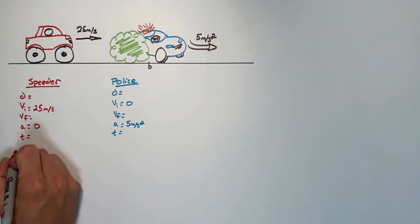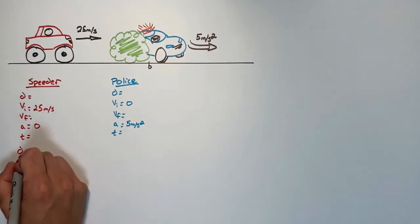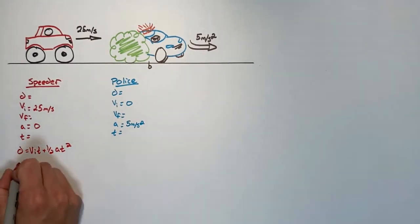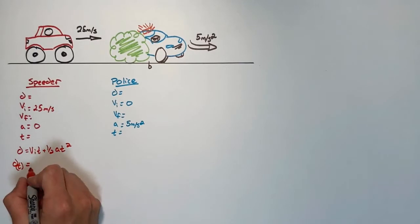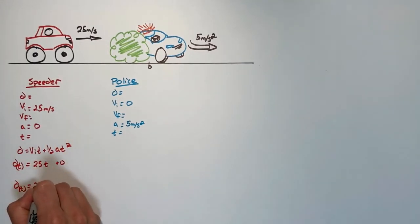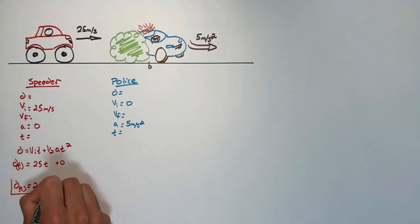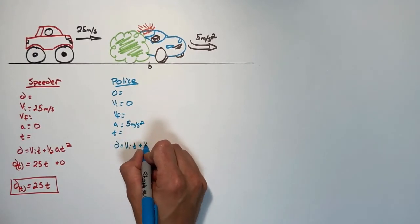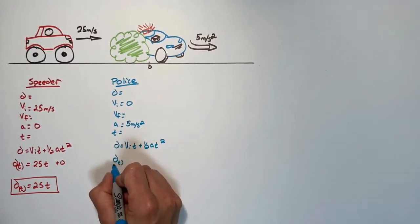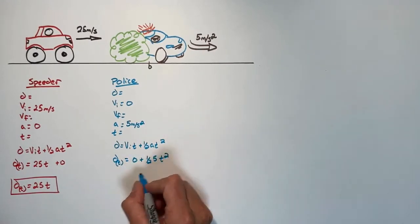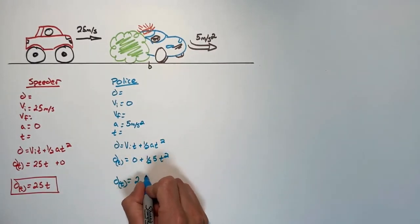First we're going to look at the speeder. We're going to use the displacement equation and fill in the known values to come up with an expression for displacement as a function of time. The displacement as a function of time for the speeder is 25t. Going through a similar process for the police car, we find the displacement as a function of time is 2.5t squared.